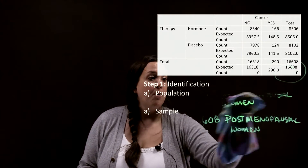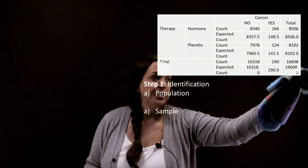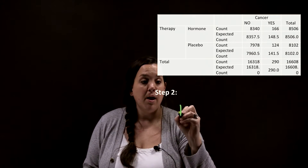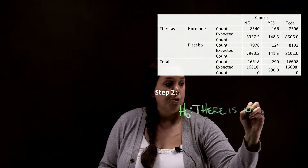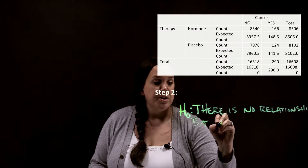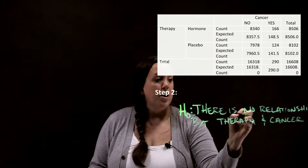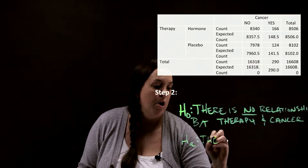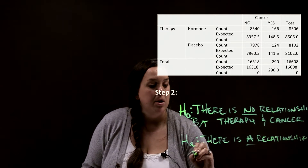In step two we're going to write our null and alternative hypotheses. You'll notice that in step one I didn't write a parameter definition, so we have no null value here. Instead we're looking at whether or not there's a relationship. The null hypothesis is always a statement of nothing happening — no relationship — so here: there is no relationship between therapy type and cancer. Our alternative is a statement of something happening: there is a relationship between therapy and cancer.